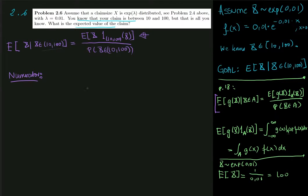So what do we have in the numerator? We have the mean of the restriction of x to 10 to 100. And that, by definition, is given by the integral from 10 to 100 of x multiplied by the density of x.